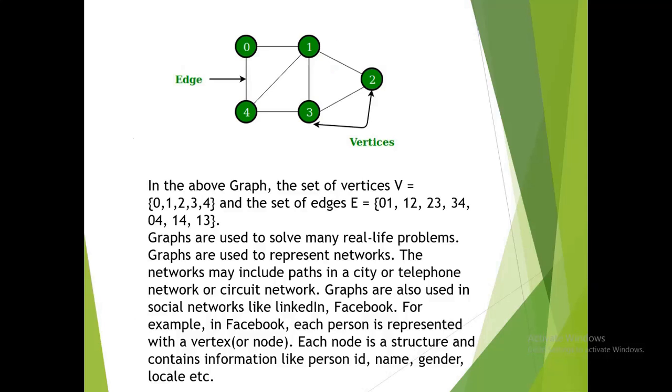In the above graph, the set of vertices V equals {0, 1, 2, 3, 4} and the set of edges E equals {01, 12, 23, 34, 04, 14, 13}.